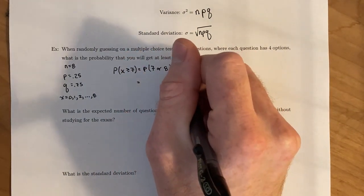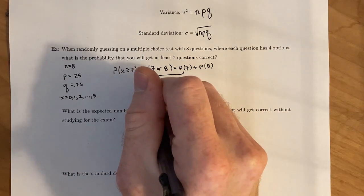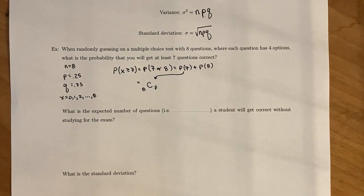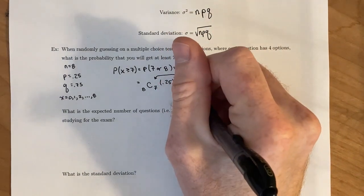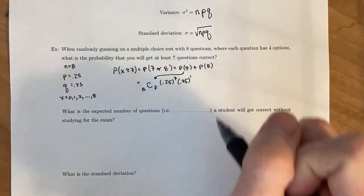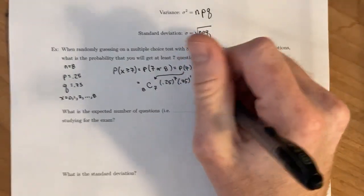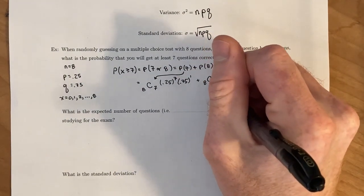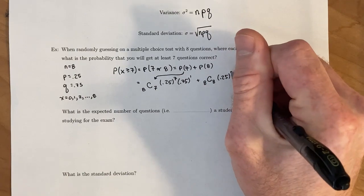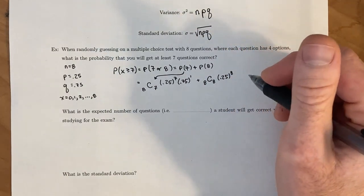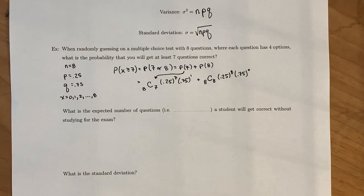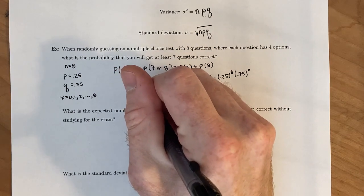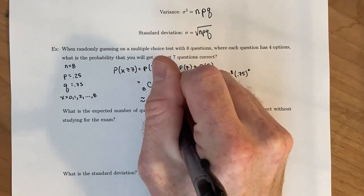So, our P of 7, we had 8 trials, and we wanted to choose 7 of those. Successes, 0.25 to the 7th, and then 0.75 to the 1st power, right, because 8 minus 7 gives us 1. Then we have plus 8, choose 8, 0.25 to the 8th power, times 0.75 to the 0th power. And now we can throw that into our calculator, if you'd like. And we end up getting that this is roughly 0.0003815.